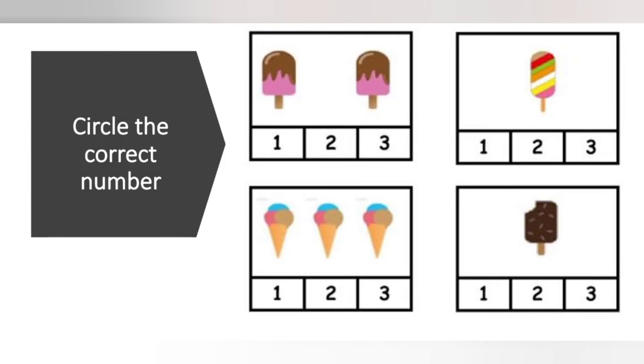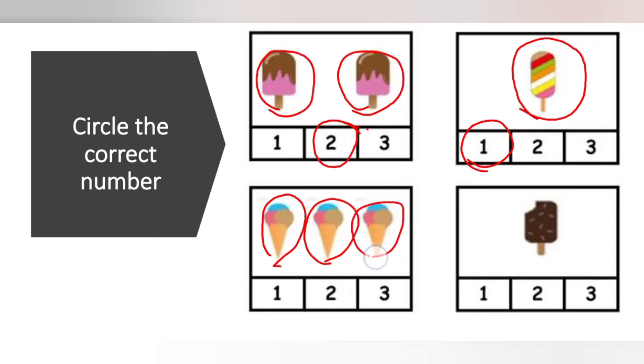In the next picture, only 1 ice cream, so we circle number 1. Now we have 3 ice creams: 1, 2, 3. We circle number 3. Very good.